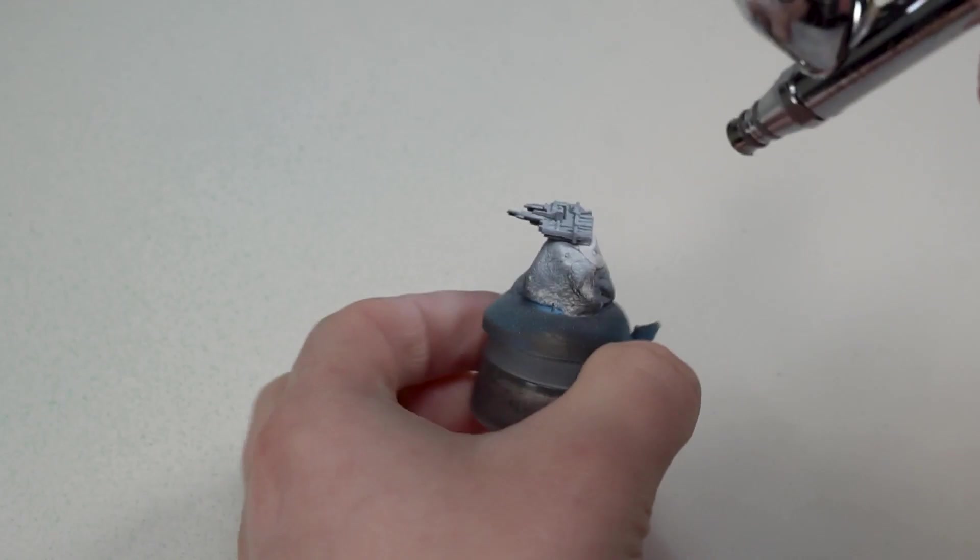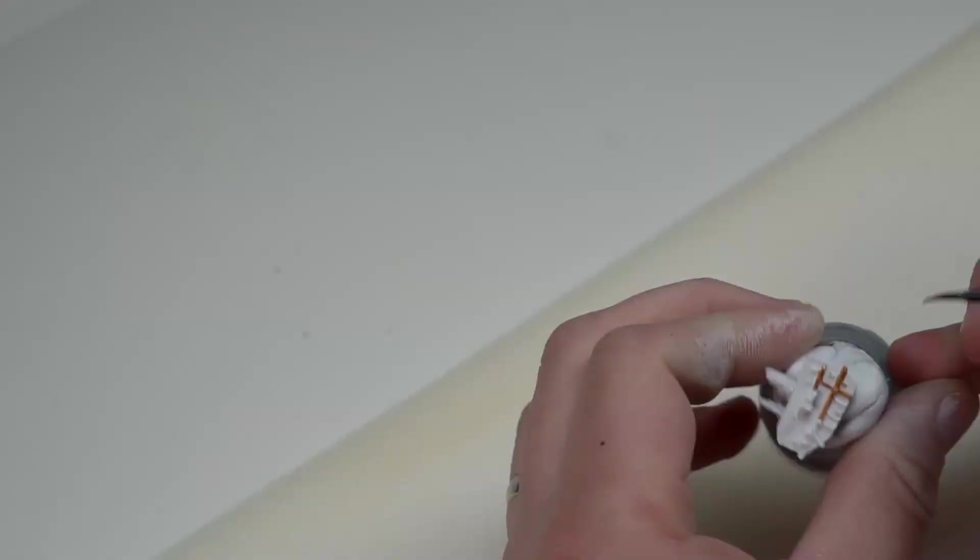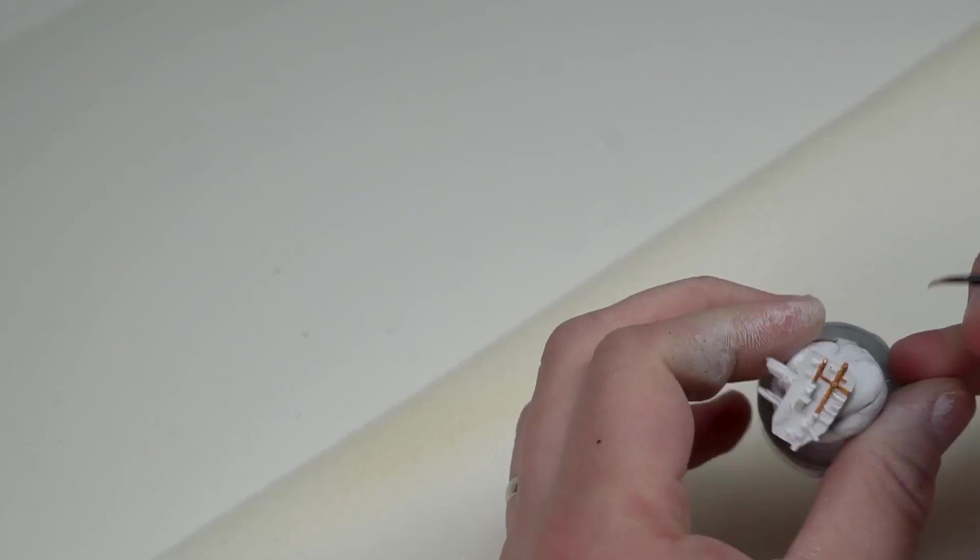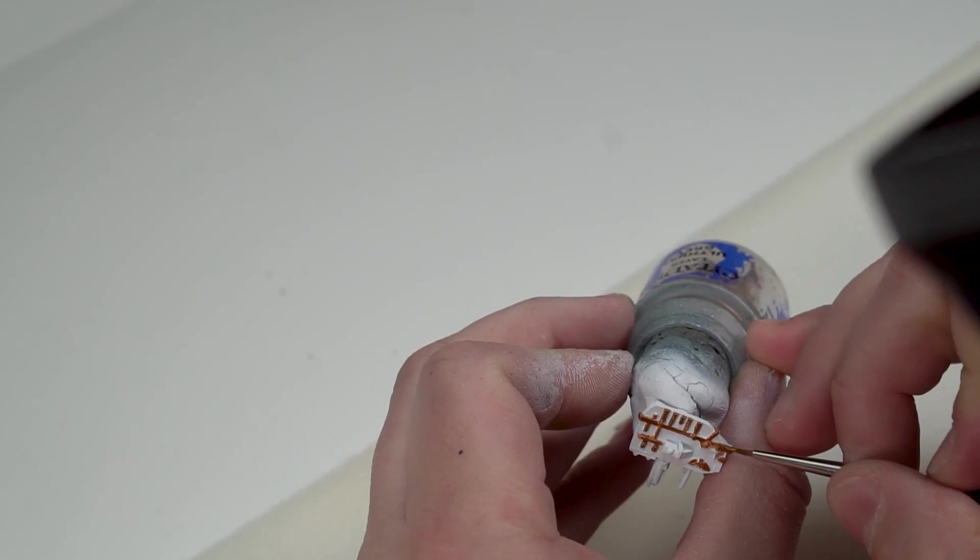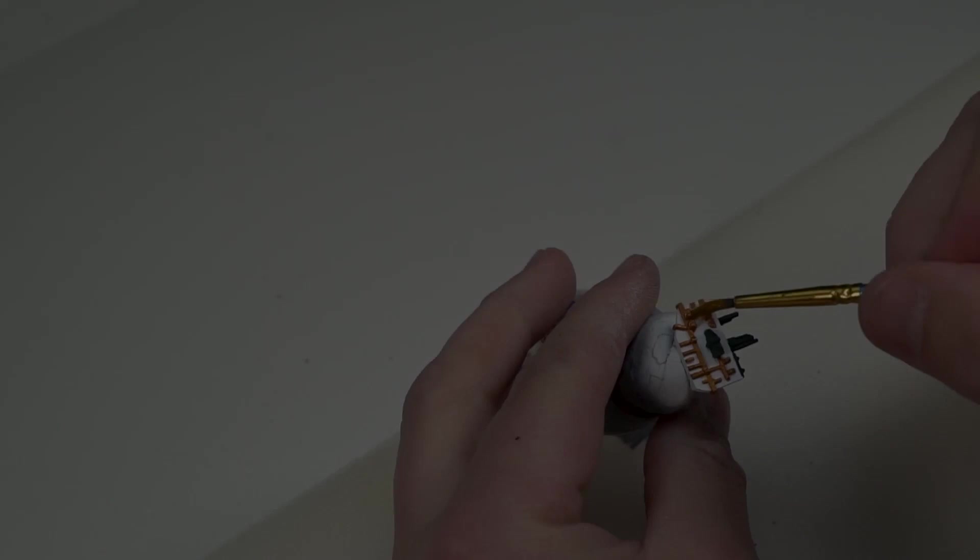Now we're going to paint the wings that come off the side of the ship and we're just using scale 75 white here. A couple of coats should do the job just fine. We're going to follow up with Gehenna's Gold for the metallic sections here. And although it wasn't on film I ended up just doing the green sections with Caliban Green as you can see in this shot here.